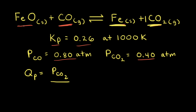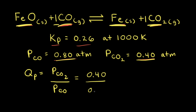Next we look at our reactants. We have a solid, so we leave that out. We have another gas, carbon monoxide. This would be the partial pressure of carbon monoxide raised to the first power, since there is also a coefficient of one. Next we plug in our partial pressures: the partial pressure of carbon dioxide is 0.40 and the partial pressure of carbon monoxide is 0.80 atmospheres. So 0.40 divided by 0.80 is equal to 0.50, so Qp at this moment in time is equal to 0.50.